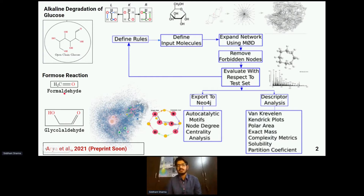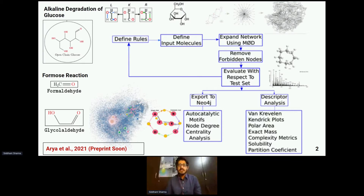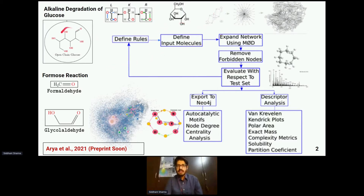We took reactions such as alkaline degradation of glucose and the formose reaction, among others. We combined those molecules in a chemical schema that the computer understands, which is SMILES, and we defined a bunch of rules. Applying graph theory and graph grammars, rules are the chemical transformations a molecule has to undergo. For example, if I have tautomerism, I'll write a rule for tautomerism, and that's a rule in graph theory. Input molecules are glucose plus water through alkaline degradation and the formose reaction, a very key fundamental reaction in prebiotic chemistry.